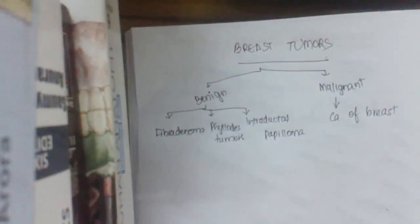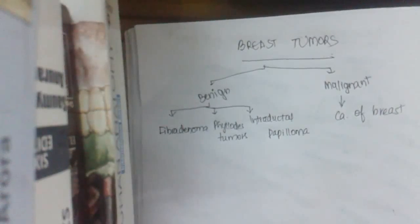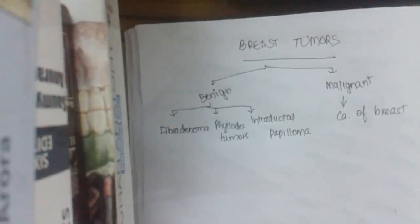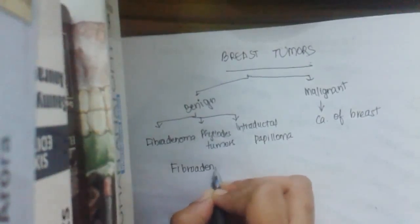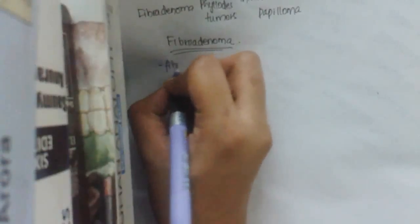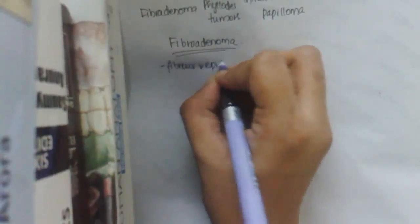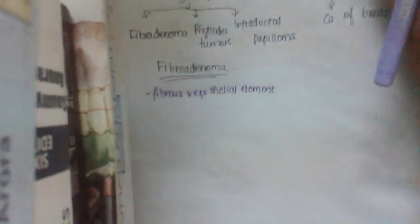We will discuss carcinoma of the breast in our next class. In today's class we will discuss fibroadenoma and phyllodes tumor. Fibroadenoma is a benign lesion of the breast. This tumor basically has two elements: one is the epithelial element and the other is the fibrous element — hence the name fibroadenoma.